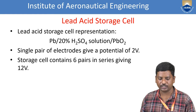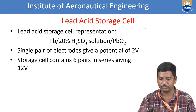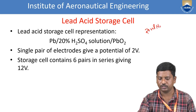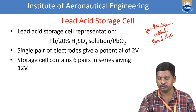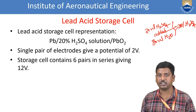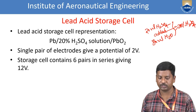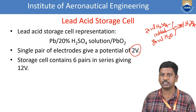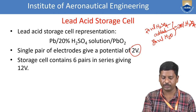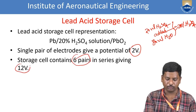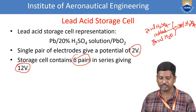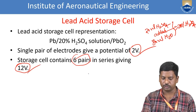The cell representation uses lead in 20% sulfuric acid solution and lead dioxide as electrodes. To prepare 20% sulfuric acid: add 20 ml of sulfuric acid to 80 ml of water. A single pair of electrodes gives a potential of 2 volts. A storage cell containing six pairs in series gives a total of 12 volts — six multiplied by two equals 12 volts.